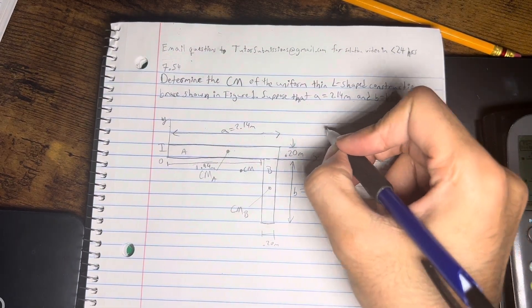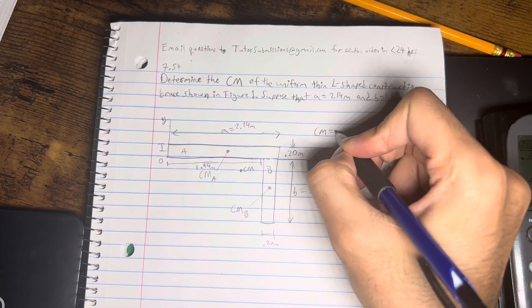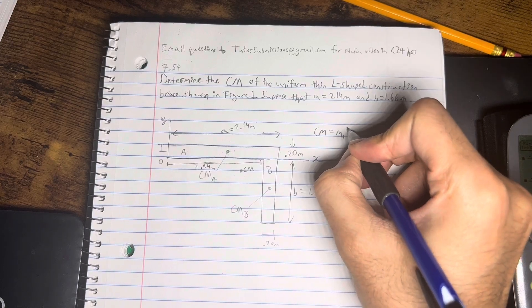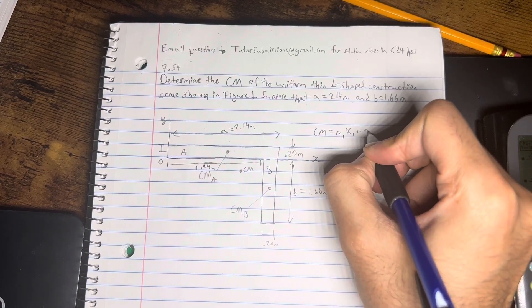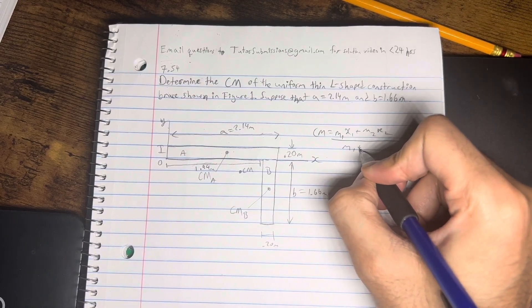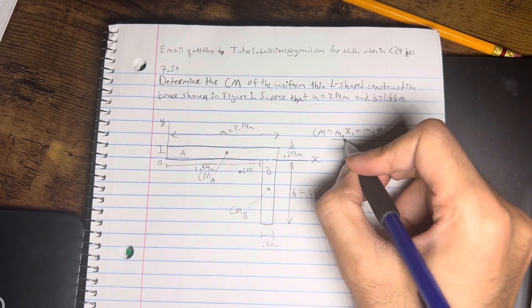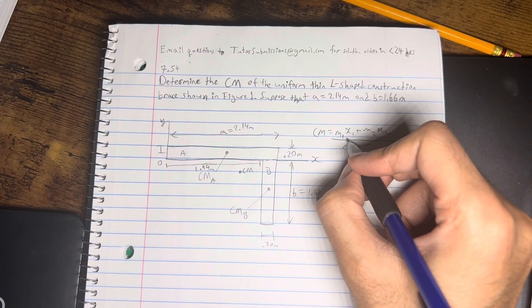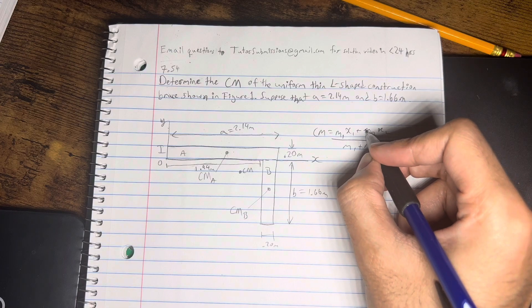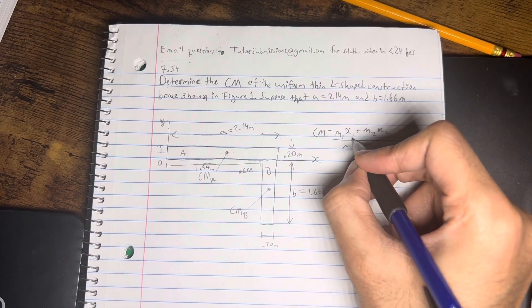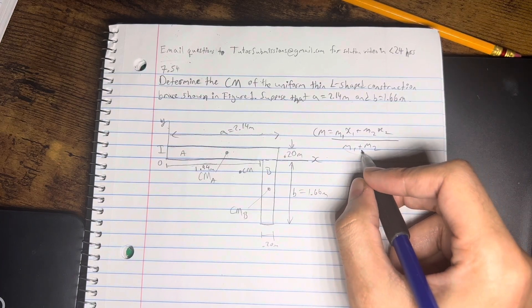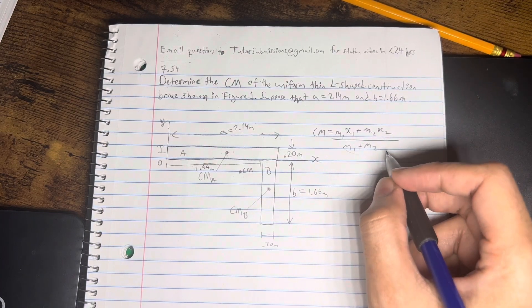So the equation for center of mass, generally speaking, can be given by m1 times x1 plus m2 times x2 over m1 plus m2. So m1 is going to be the first mass, m2 is the second mass on the other end of the fulcrum. And then x1 is the first coordinate, x2 is the second coordinate, and it's going to be the total mass, or the addition of both masses together.